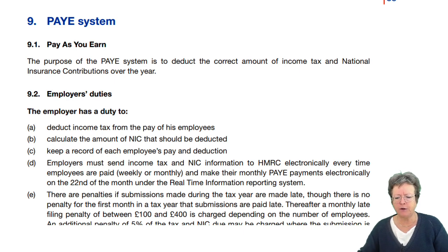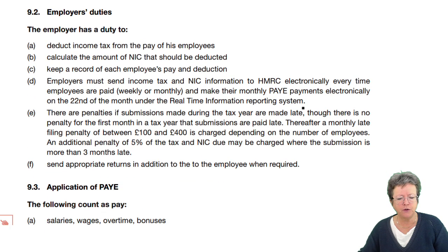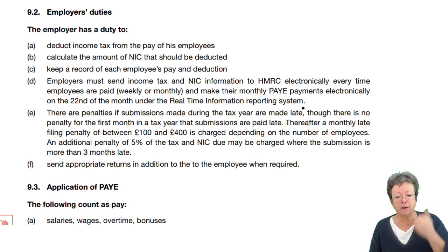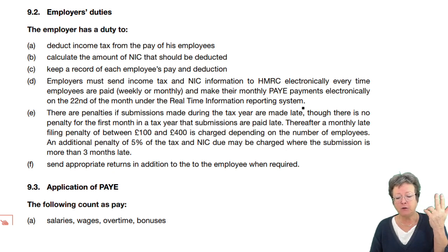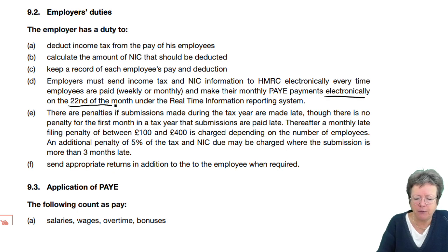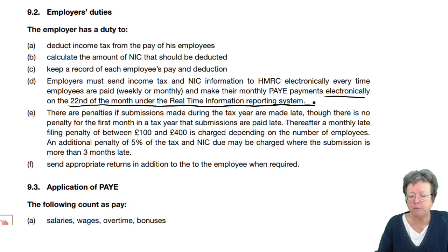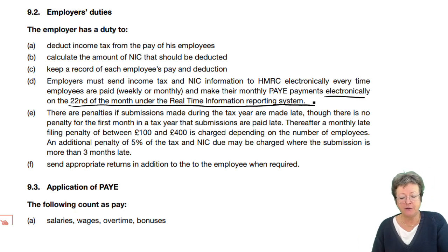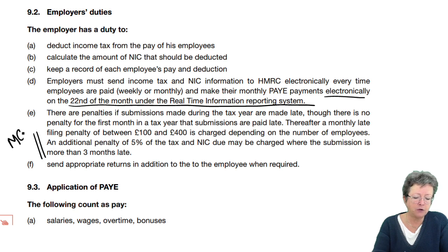Regarding employer duties — what they have to do, and again this could appear as a multiple choice question — they have to deduct income tax from the pay, work out the national insurance contributions and deduct that, and then keep records. They then have to give that information weekly or monthly, electronically, on the 22nd of the month under what's known as the real-time information reporting system. There are penalties if you don't do it, and that could also be a multiple choice question.